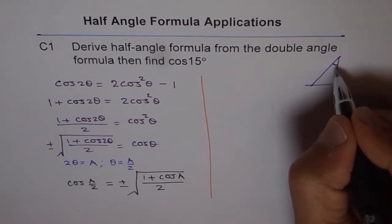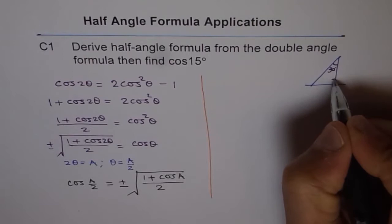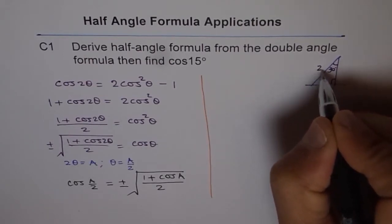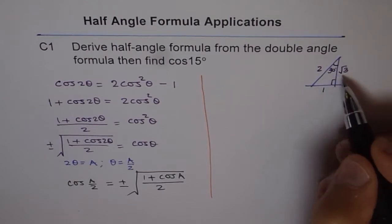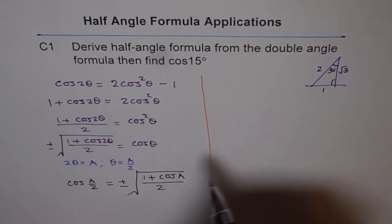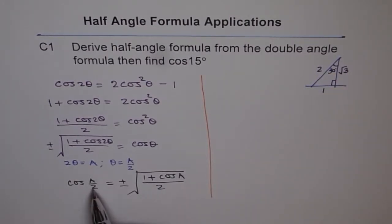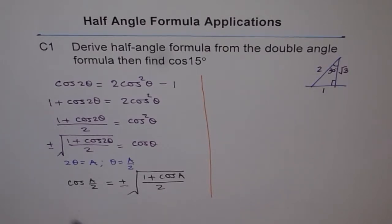Now, this special triangle has 30 here. This is 90 degrees. The sides are 1, 2, and √3. So what is cos 30°? Cos 30° is √3/2. So we know cos 30°, we can find cos 15°. That is how we will find cos 15°.